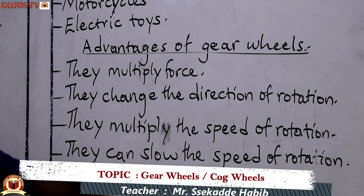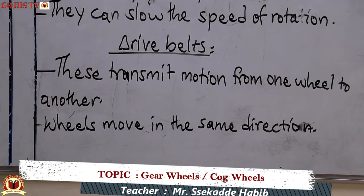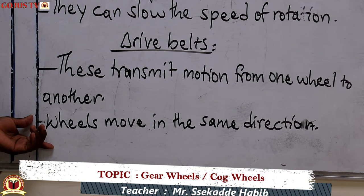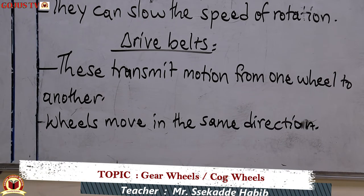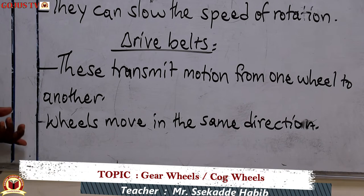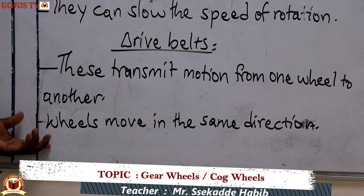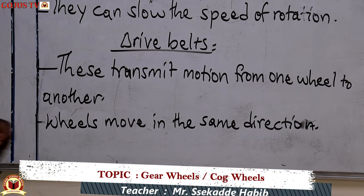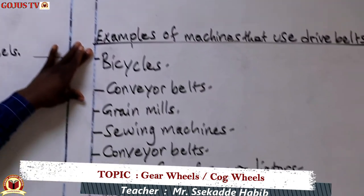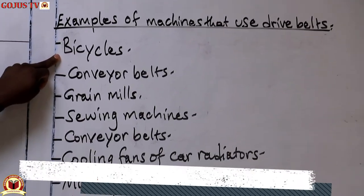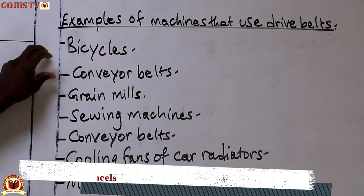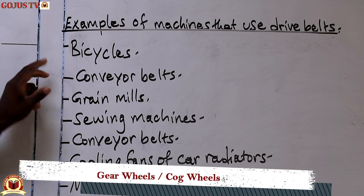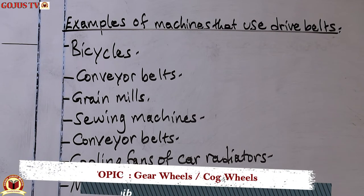We also have what we call drive belts, which are derived from gear wheels. These transmit motion from one wheel to another, making wheels move in the same direction. When gear wheels are connected with belts, what we get are called drive belts. On a bicycle, you can see two gear wheels connected together by a chain — that chain is what we call the drive belt.